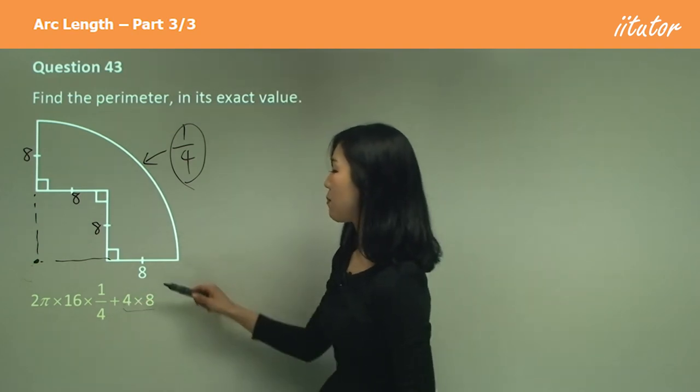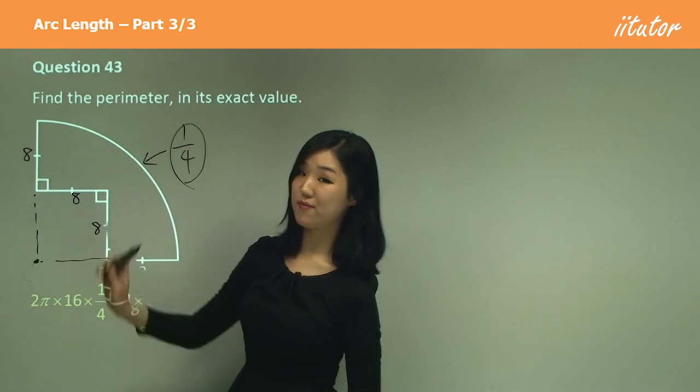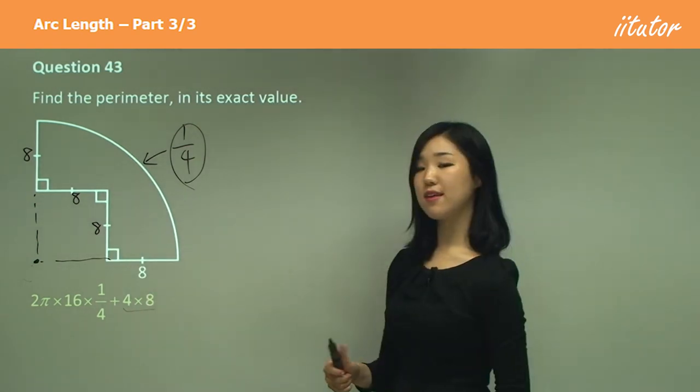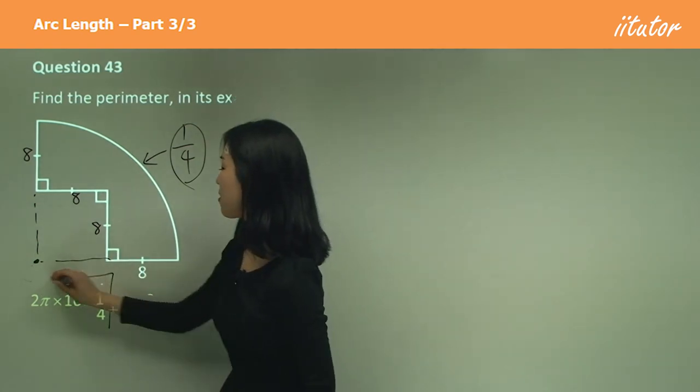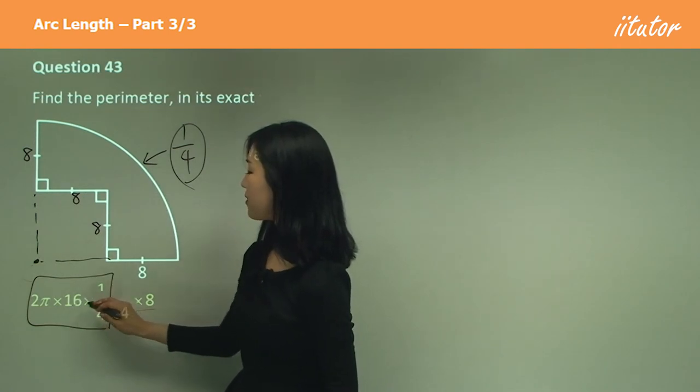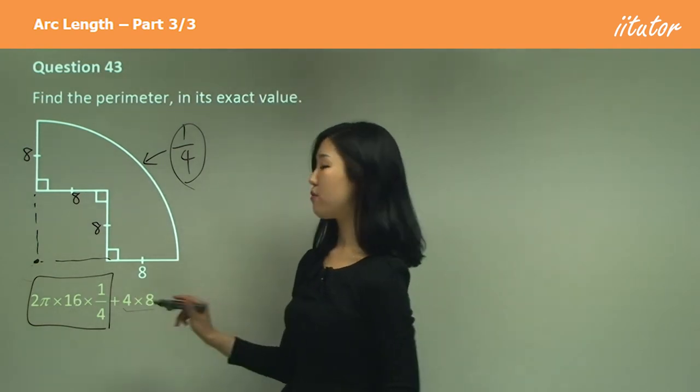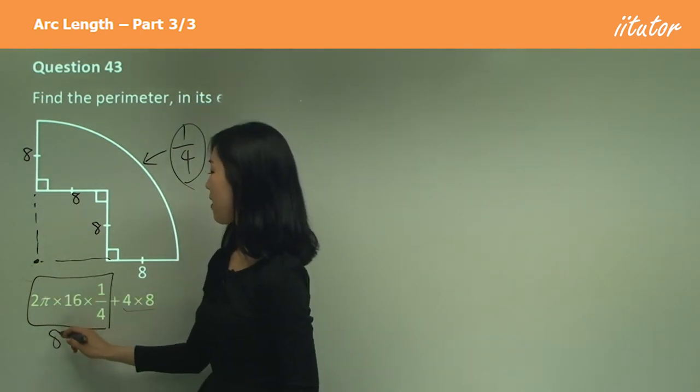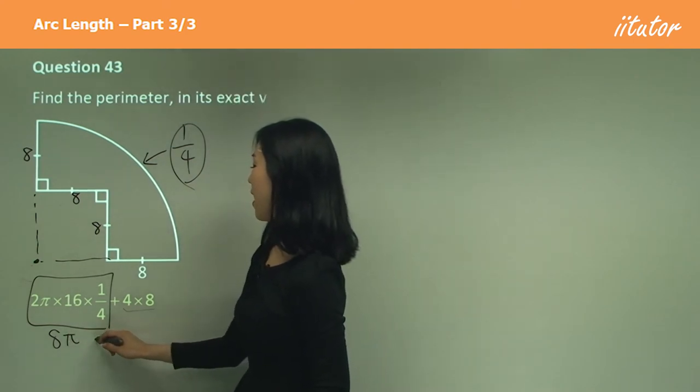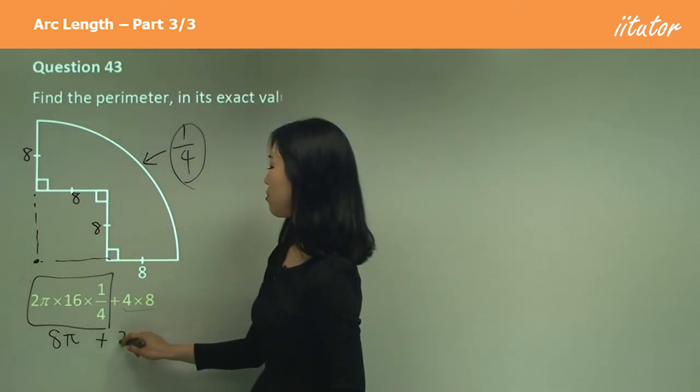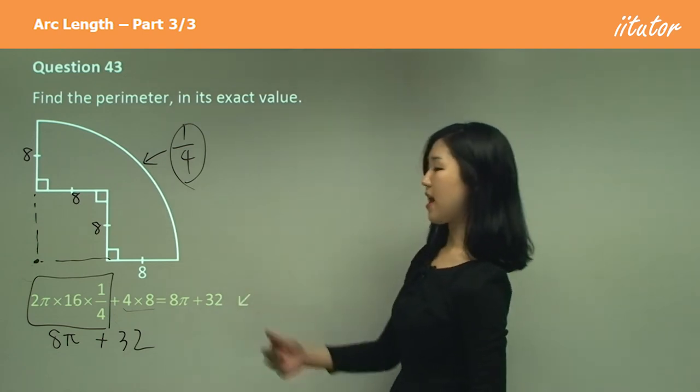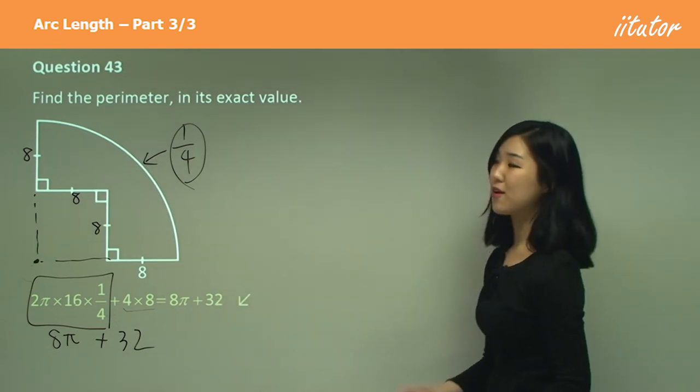So quarter plus 4 times 8, because there's 1, 2, 3, 4 lots of 8 in this shape. Find the exact value, so make sure you simplify this thing. 16 divided by 4 is 4, 4 times 2 is 8, so we have 8π here, and then we add it to 4 times 8, which is 32. That's the answer, 8π plus 32, that is your answer in exact value.